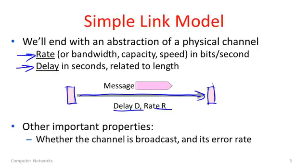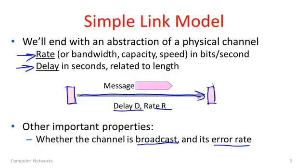There are other properties of physical channels that are important. One good example is whether a channel is broadcast. Wireless links tend to be broadcast — on a broadcast channel, when a message is sent by a sender, it is received simultaneously by all receivers within range. Other kinds of media, like wires, are typically not broadcast; they just go from one sender to one receiver. We may also care about whether a link has a very high or very low error rate. Media such as fiber have very low error rates, so nearly all the time you'll get the message intact at the other side. Wireless channels have high error rates, so wireless messages will quite often be garbled. Eventually we'll get to mechanisms to deal with and fix that.